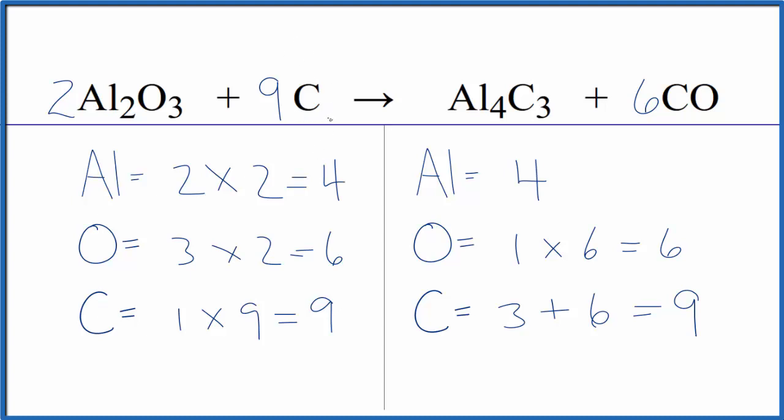So when you have an atom by itself like the carbon here, you usually want to leave that until last. This is Dr. B with the balanced equation for Al2O3 plus C. Thanks for watching.